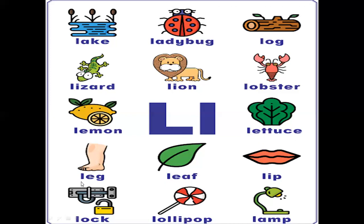Now what is this? This is a leg. Leaf — you already know. And what is this? This is a lip. Rosy lips, isn't it? Chubby cheeks, rosy lips. And lock — we already learned that. And as you said, a word with L — lollipop! I know you all love lollipops. And the light, the lamp. L for lamp.